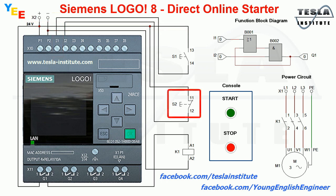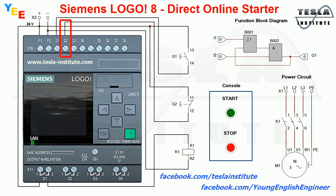The normally closed push button S2 is used to stop the motor. This button is connected to the plus of the 24 volt power source and to digital input I2 of the controller.